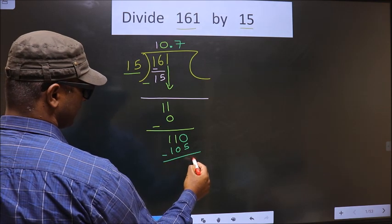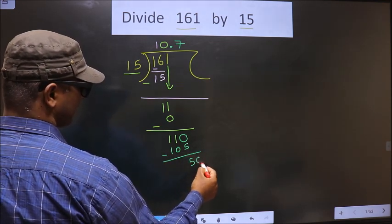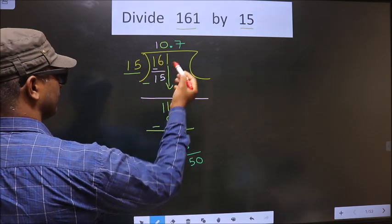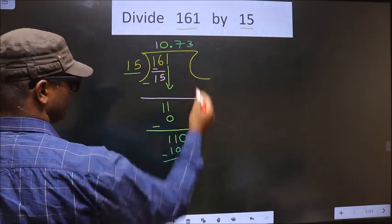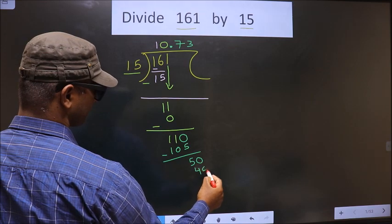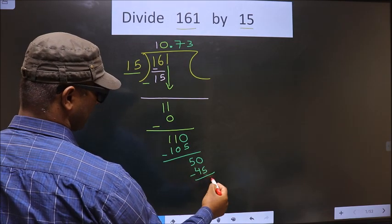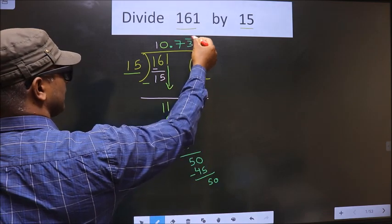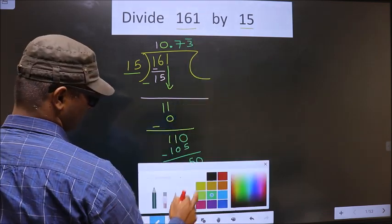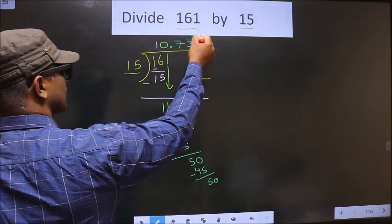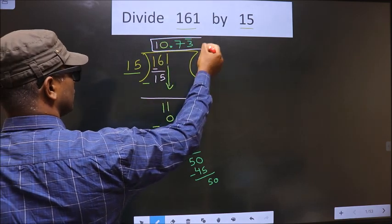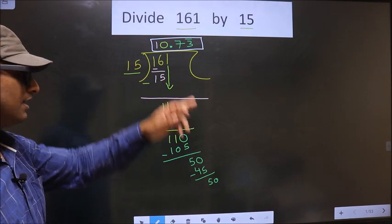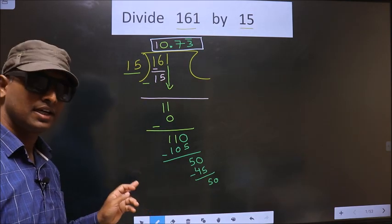Now you subtract, you get 5. Now you directly take 0. A number close to 15 in the 15 table is 15 threes, 45. So if you subtract you get 5. That means 3, 3 goes on. So this is our question. Am I clear?